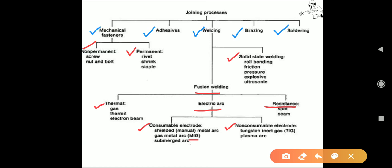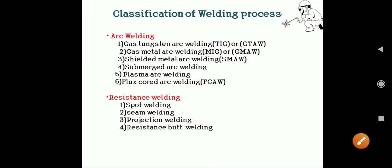Under non-consumable electrode welding: tungsten inert gas welding (also called TIG welding) and plasma arc welding. Resistance welding includes spot welding and seam welding. Summarizing the arc welding classification, different types include: gas tungsten arc welding, gas metal arc welding (MIG), shielded metal arc welding, submerged arc welding, plasma arc welding, and flux arc welding. Resistance welding has four types: spot welding, seam welding, projection welding, and resistance butt welding.